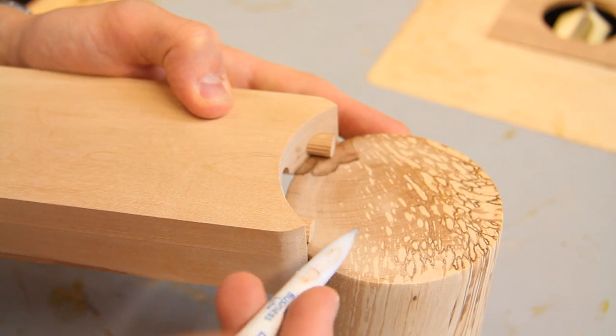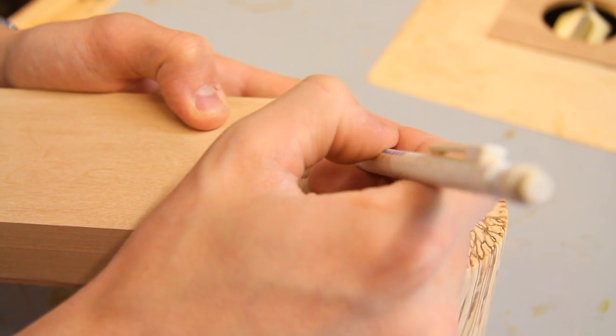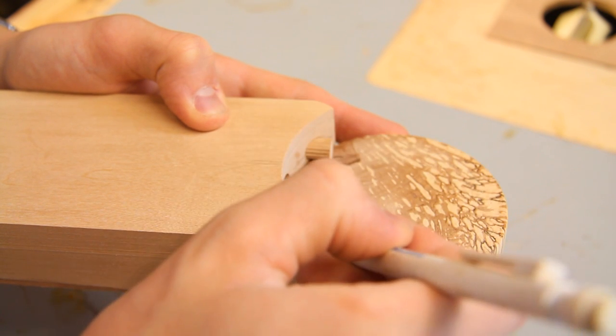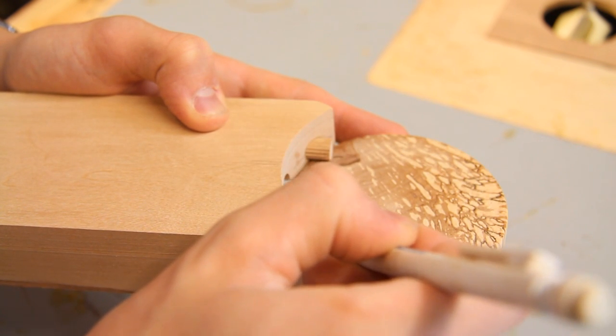So now using those in place I'm actually going to mark the centre of each dowel so I can transfer the lines.